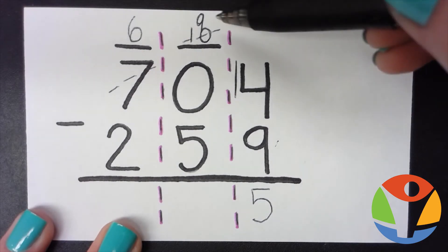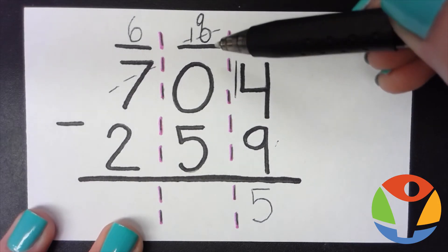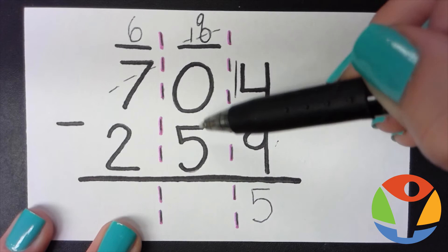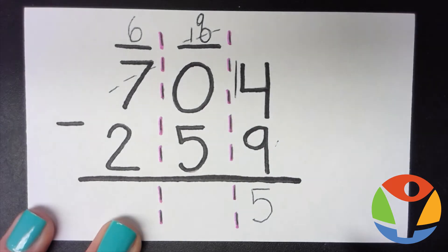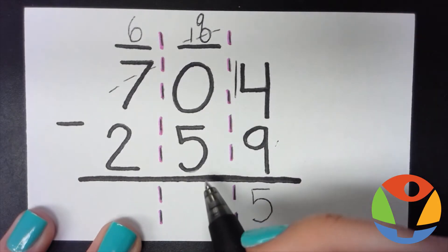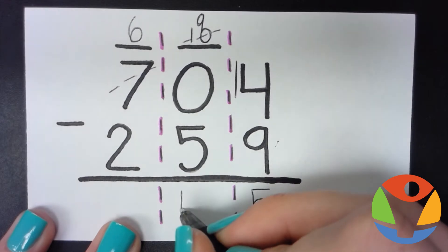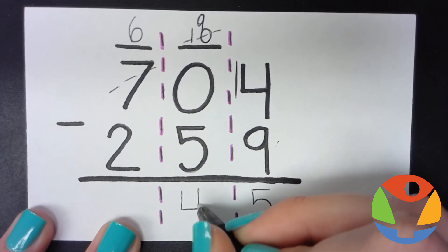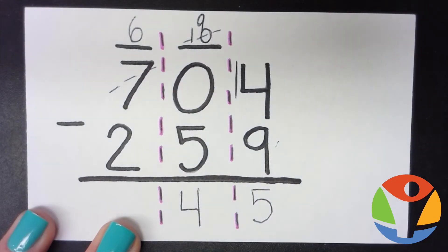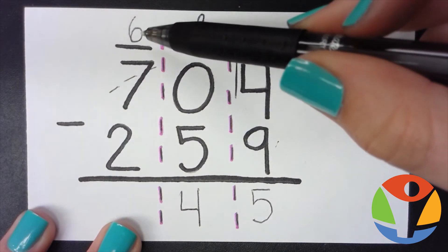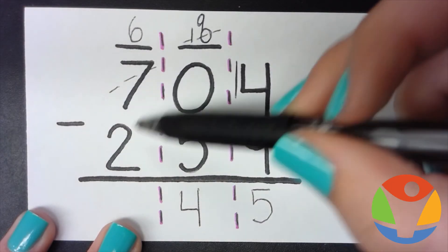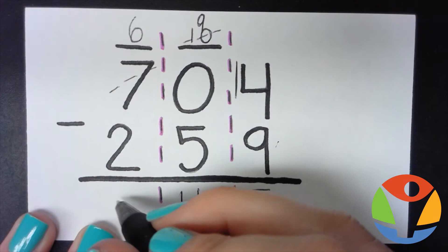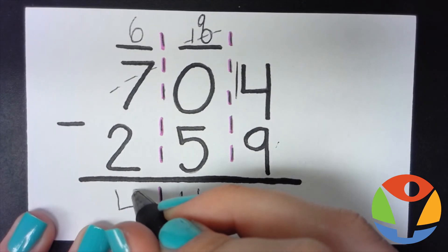And now we have nine over here, so it will be 9 minus 5, which gives us 4. And lastly we have 6 minus 2, which will give us 4.